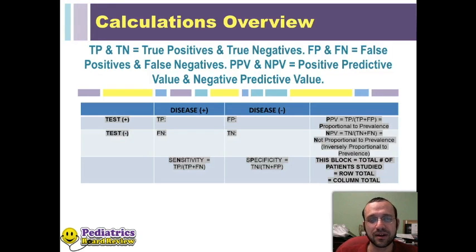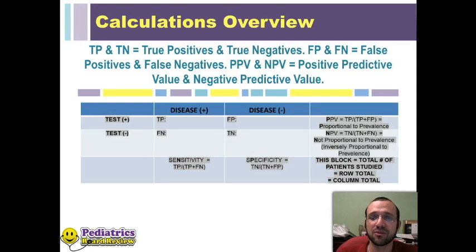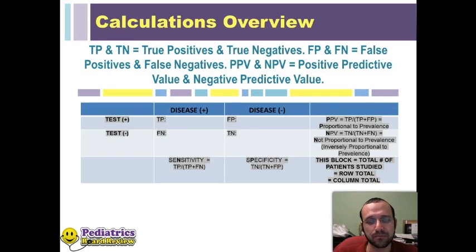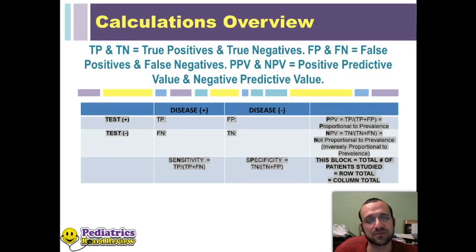Row two, left to right, is your test results positive — so true positives and false positives. Row three is going to be testing negative — your false negatives and true negatives. Column one is your test results, so positive and negative.